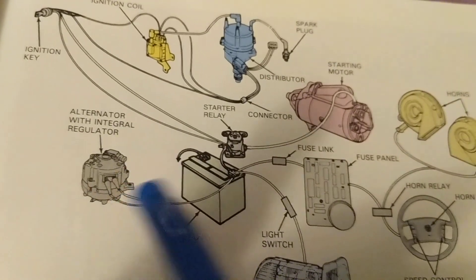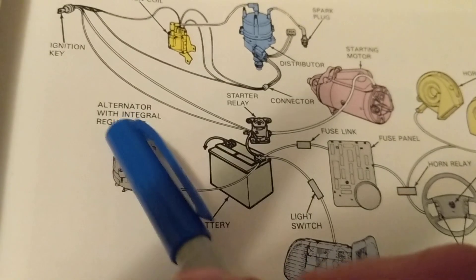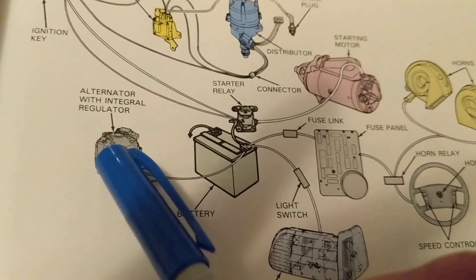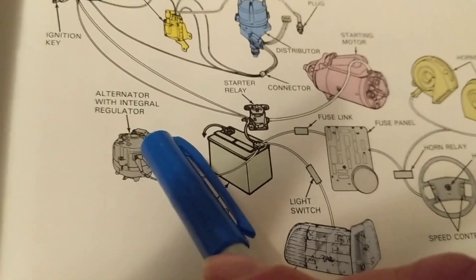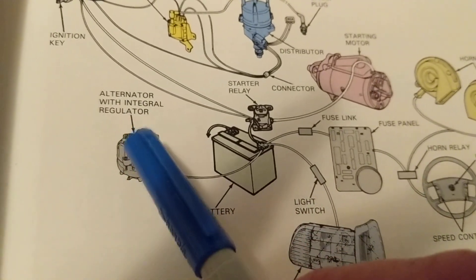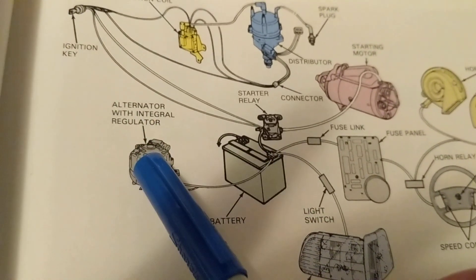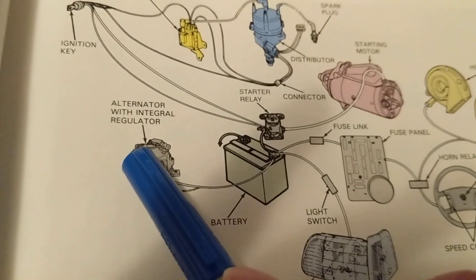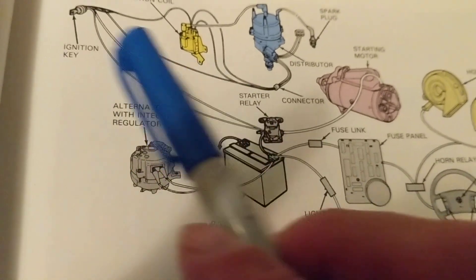After the engine starts, we need to replenish the battery — that's where the alternator comes in. It has an integral regulator that controls voltage output to keep it constant under all load conditions. Whether you put the lights, wipers, radio, or all accessories on, the voltage stays the same. It's an AC generator with diodes inside; a shorted diode will cause problems.